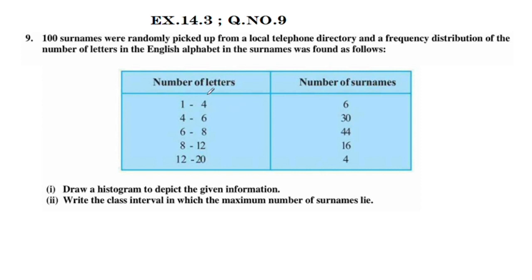The number of letters: 1 to 4 letters — 6 surnames; 4 to 6 letters — 30 surnames; 6 to 8 letters — 44 surnames; 8 to 12 letters — 16 surnames; 12 to 20 letters — 4 surnames.